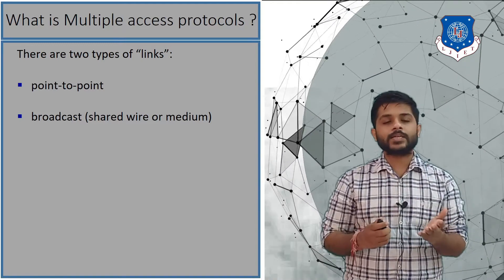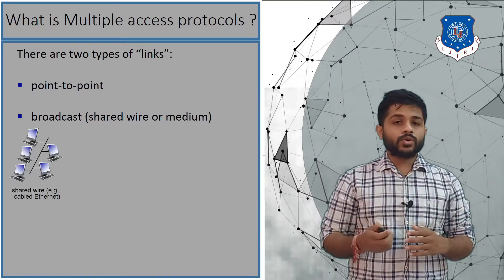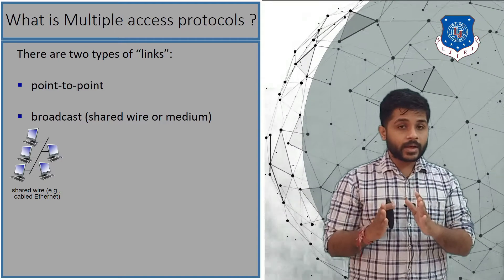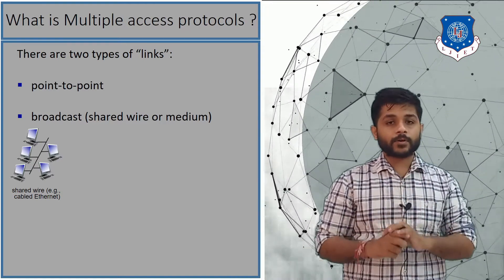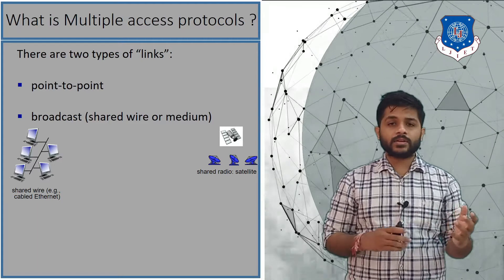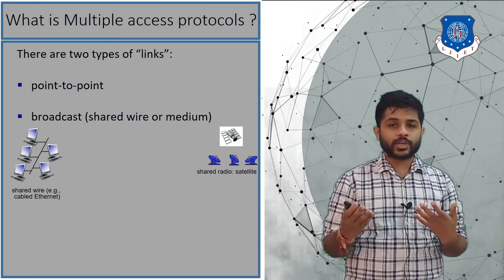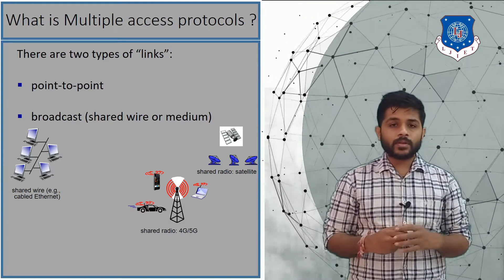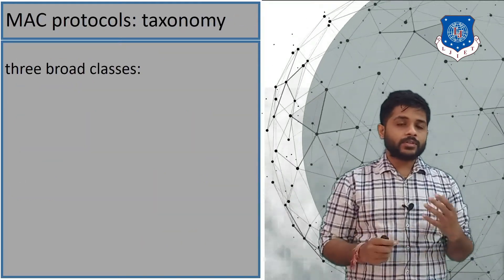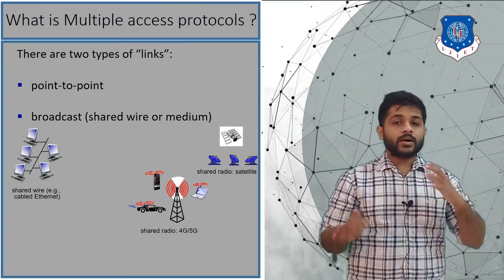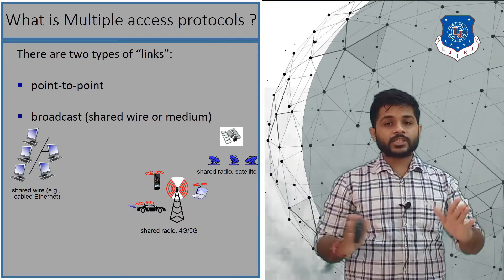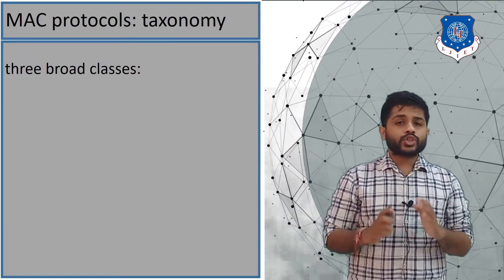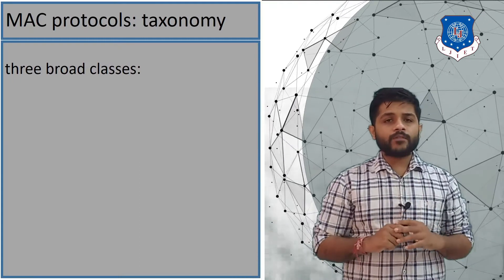In computer networks, when the link is shared by many devices, there are protocols that all devices must follow in order to send and receive data. Ethernet shared wire requires the multiple access protocol, and shared satellite communication also needs the multiple access protocol, as does shared radio. These are the areas where the multiple access protocol is highly required.